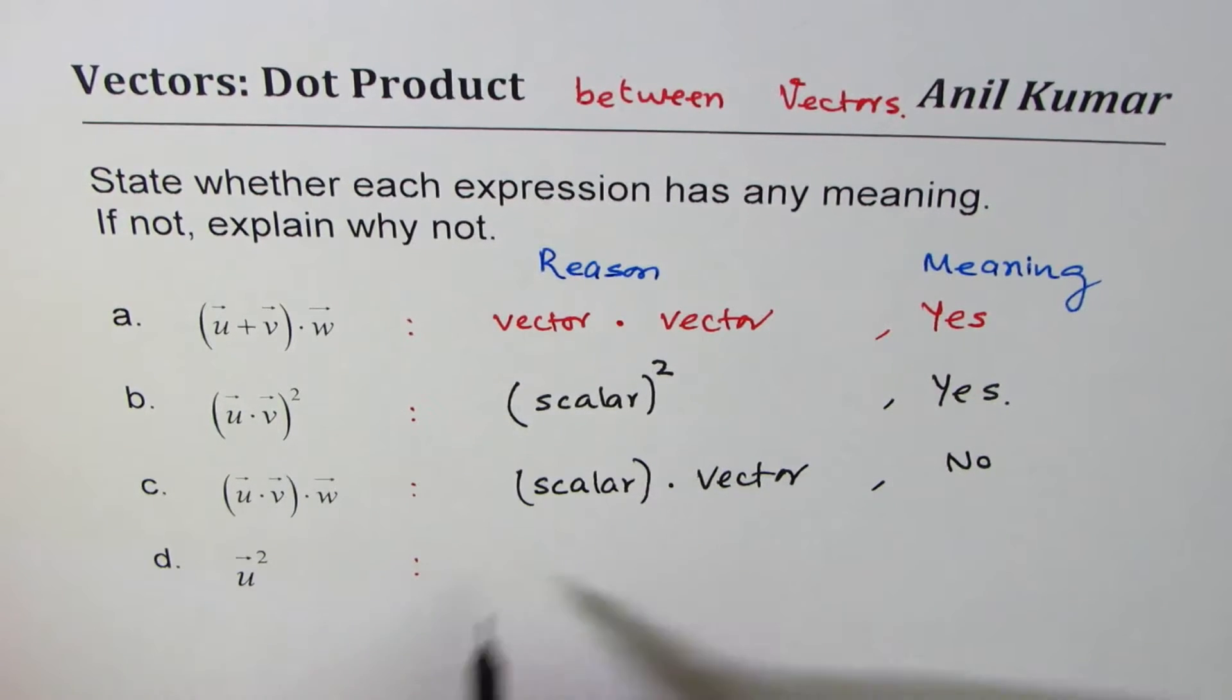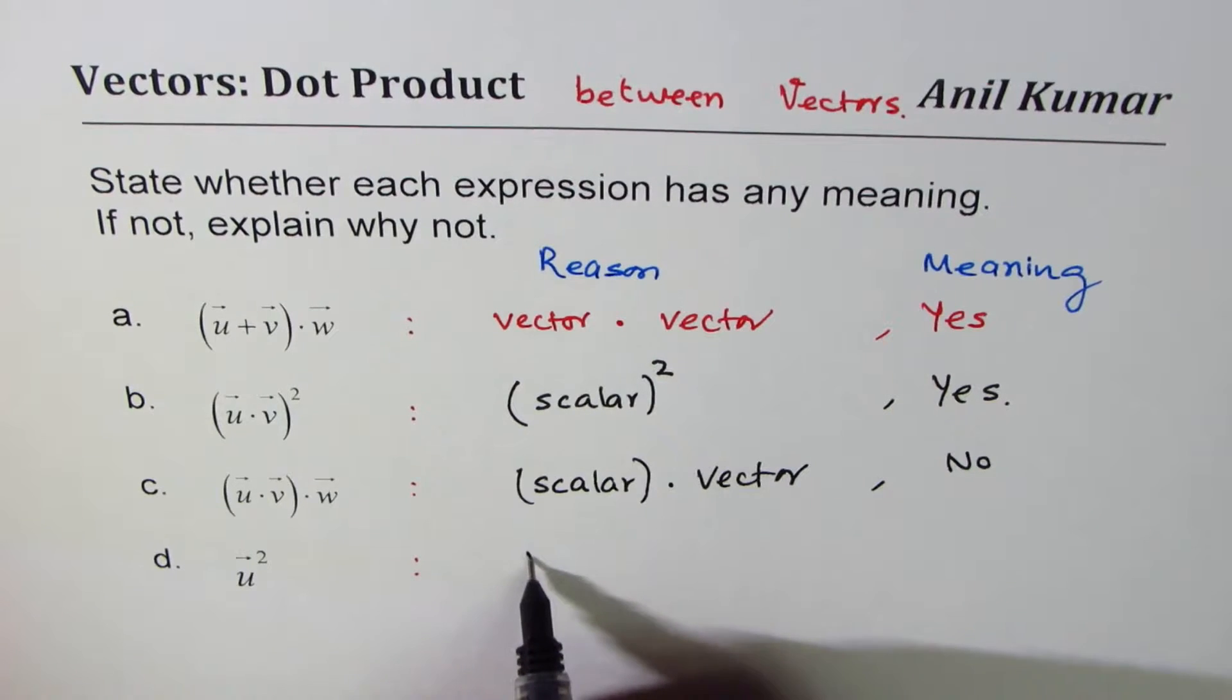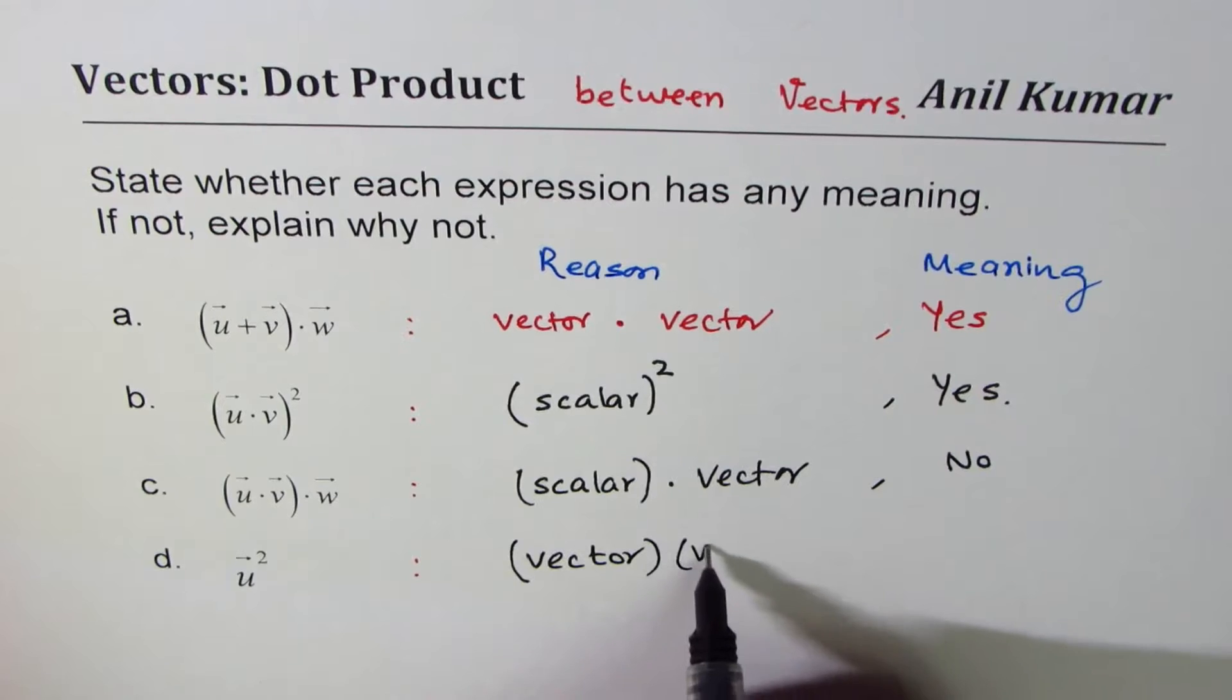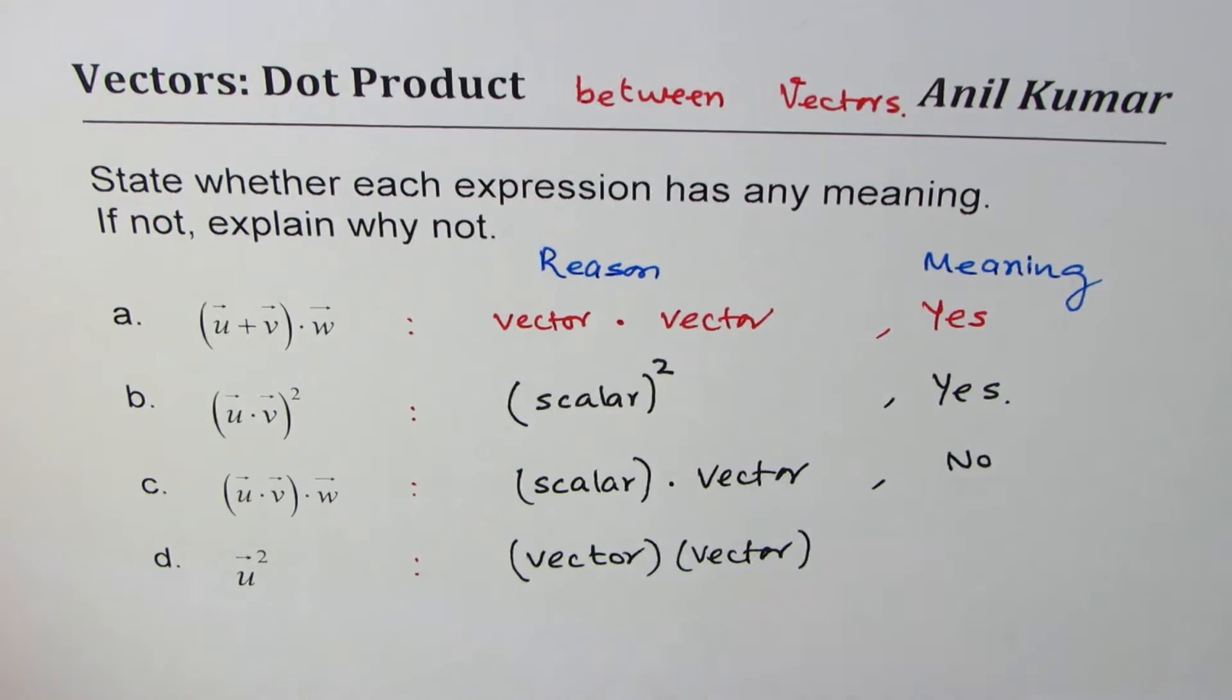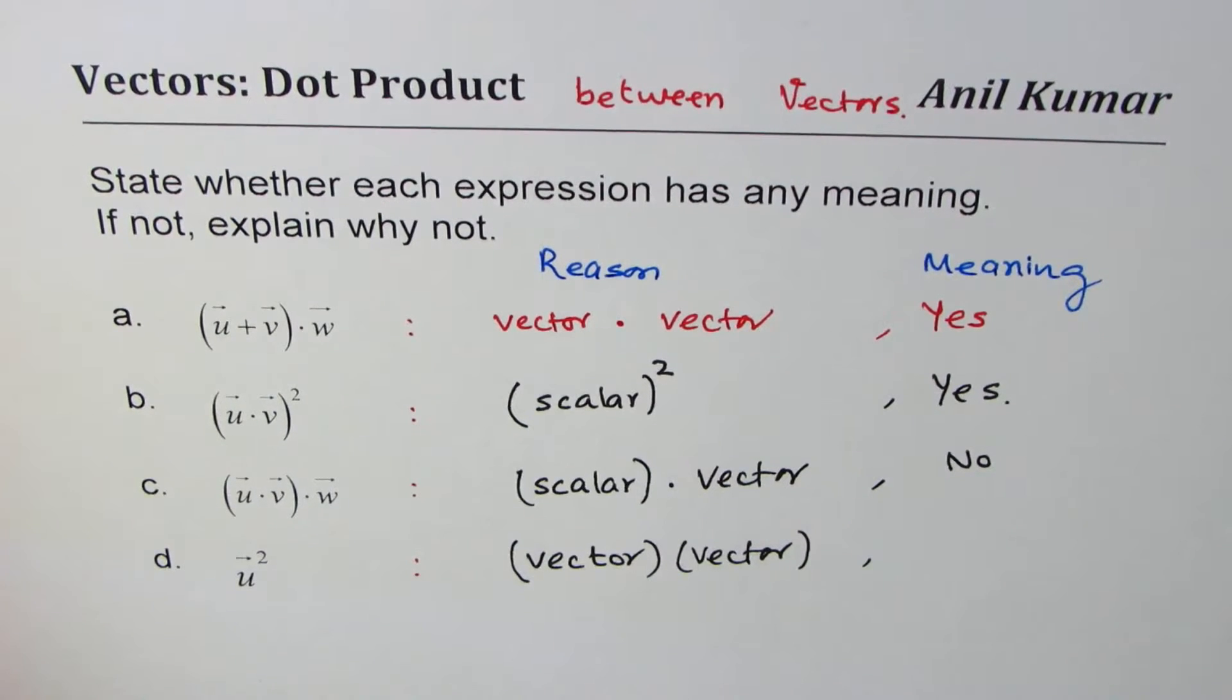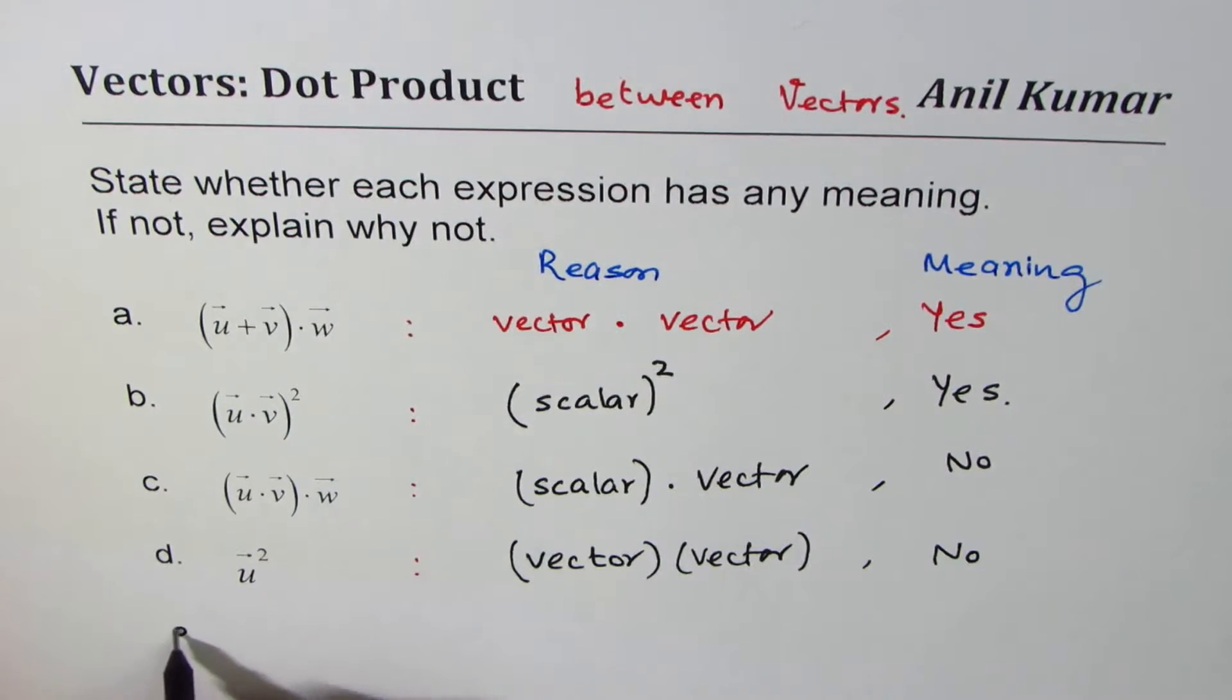Vector square. We have vector square, so that means we have vector times vector. Does that have any meaning? What do you say? Think about it. We don't have anything in vector times vector, so this is not meaningful. No. Now since I solved all this, let me add a question for you.